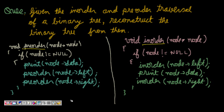The next question is: given the in-order and pre-order traversal of a binary tree, how will you reconstruct the binary tree from them? This is the reverse of finding traversals and it's a bit more difficult. Generally you are asked how to find in-order and pre-order traversals given a binary tree, but here it's different — you are given the traversals and have to reconstruct the tree.